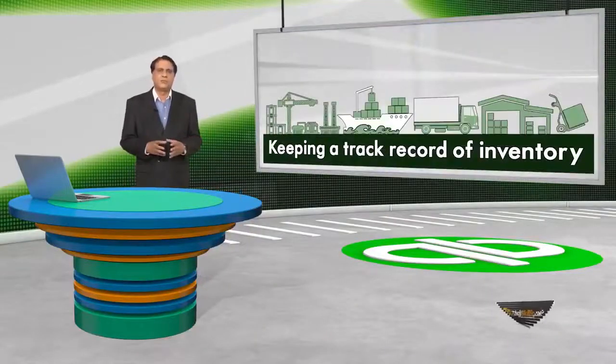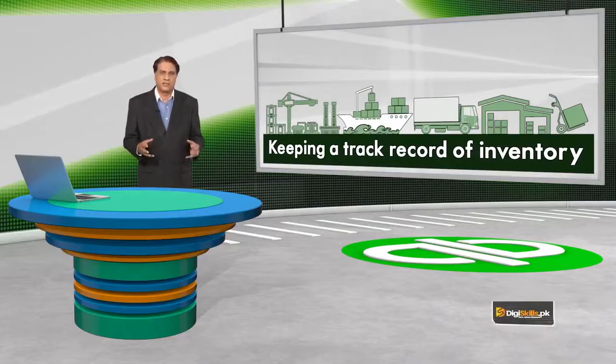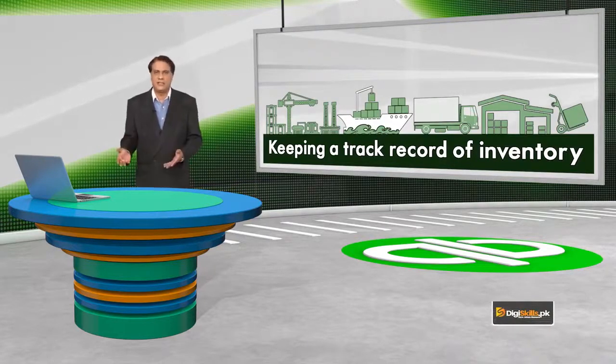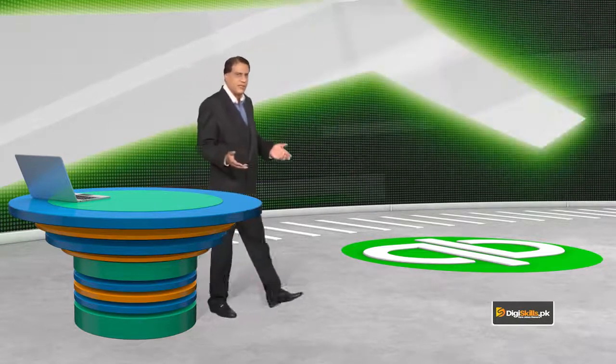بہت سے مینوفیکچررز یہ تمام چیزیں ڈائریکٹلی کسٹمر کو نہیں بیچ سکتے کیونکہ ان کے پاس اتنا بڑا ڈسٹریبیوشن نیٹ ورک نہیں ہوتا، نہ بڑے گودام، نہ بڑی شاپس۔ وہ مینوفیکچرنگ پر کنسنٹریٹ کرتے ہیں۔ آپ سیلر ہیں اس لیے آپ اس انونٹری پر کنسنٹریٹ کرتے ہیں۔ انونٹری is treated as part of your assets اور اس کا ٹریک ریکارڈ رکھنا ضروری ہے۔